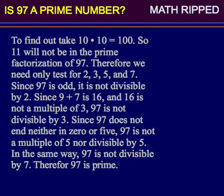In the same way, 97 is not divisible by 7. Therefore, 97 is prime.